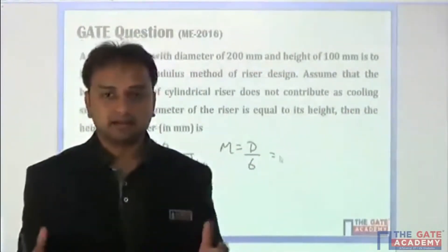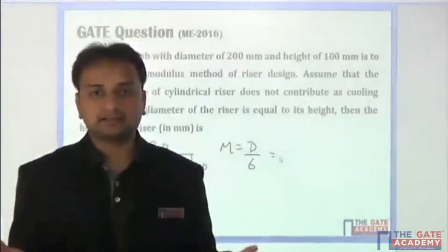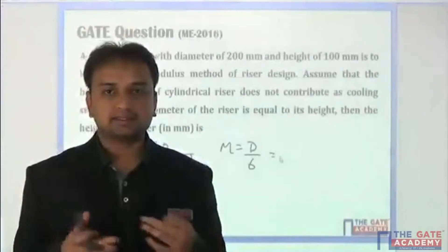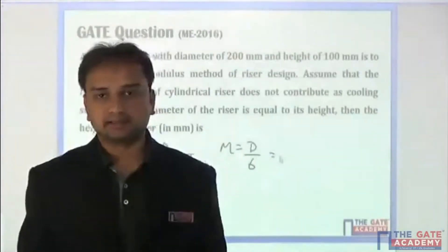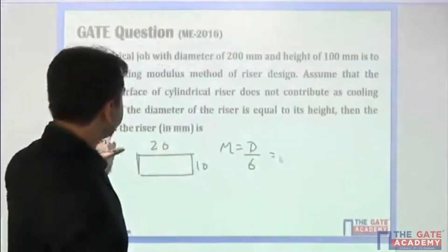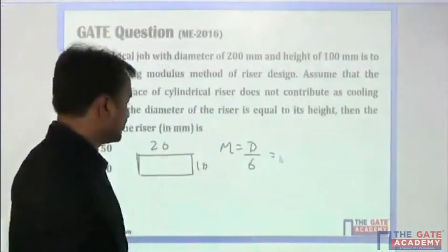If you're talking about a cylinder, there are two variables: diameter and height. You have to design a riser which can minimize the exposed surface area.